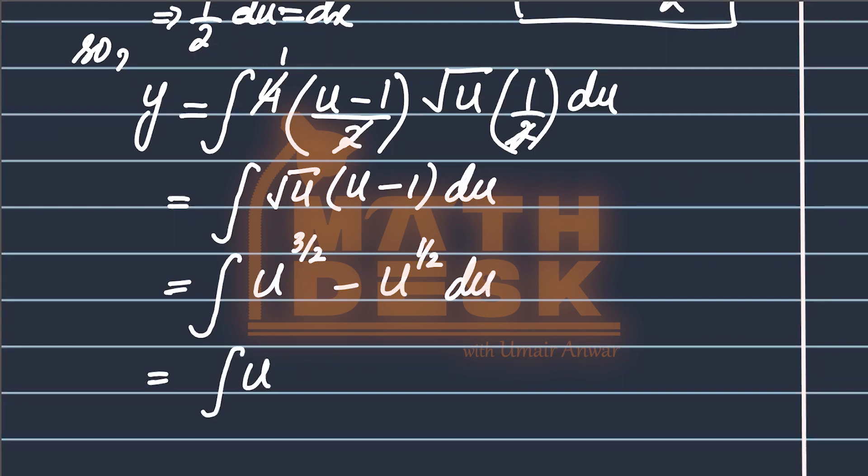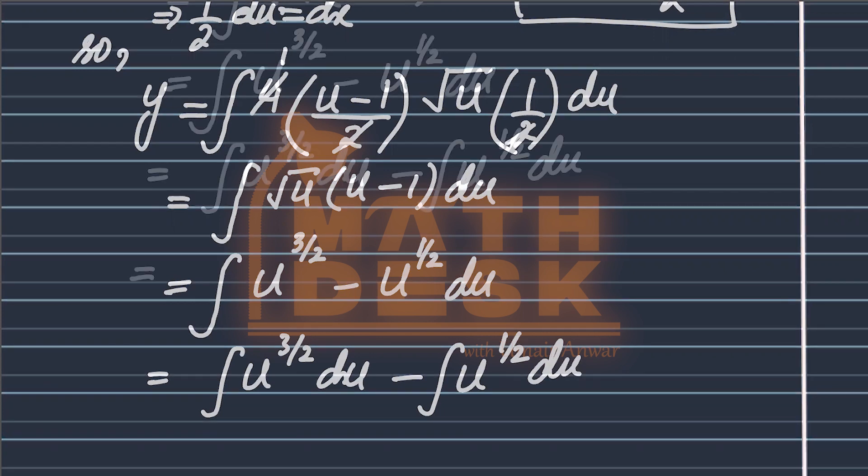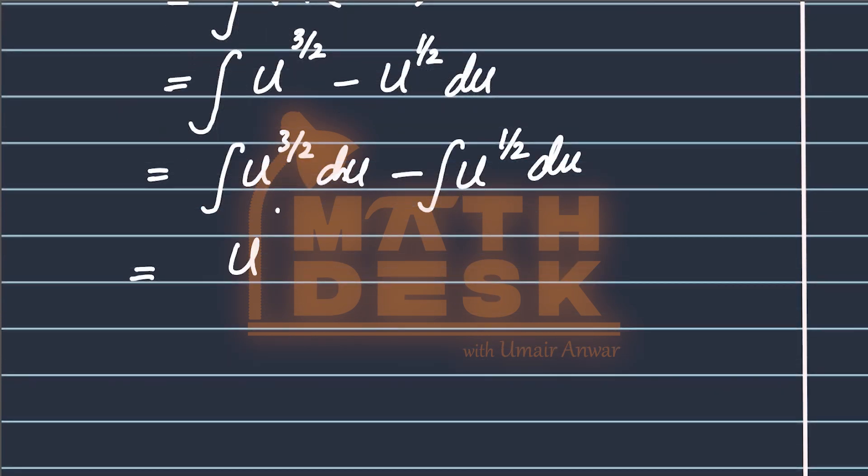Operator को दोनों के लिए move कर देंगे तो दोनों के साथ हम integral du लिखतेंगे सबसे पहले हम power में one add करेंगे और फिर इसी से हम इसको divide कर देंगे minus.